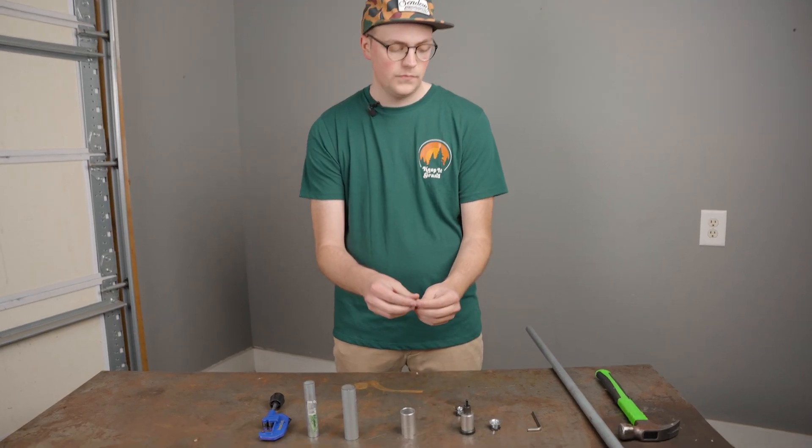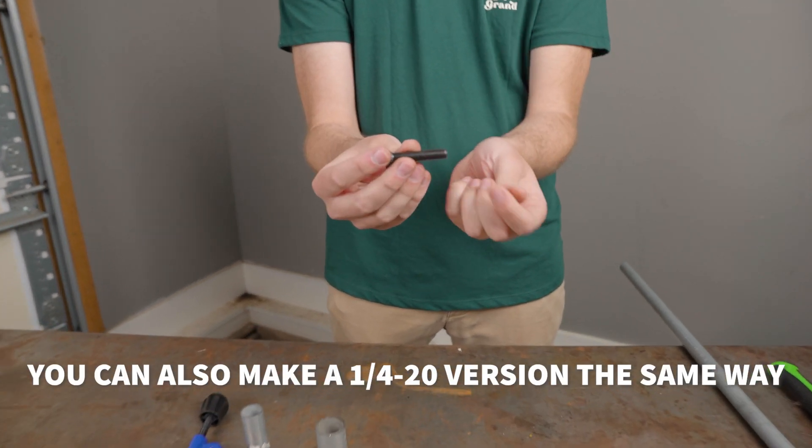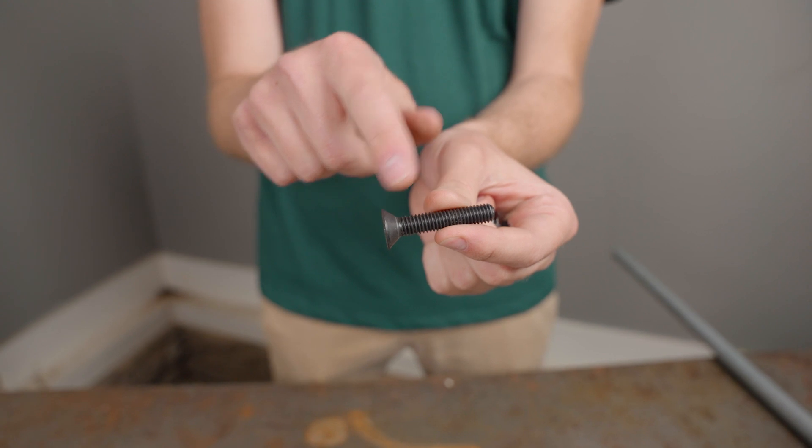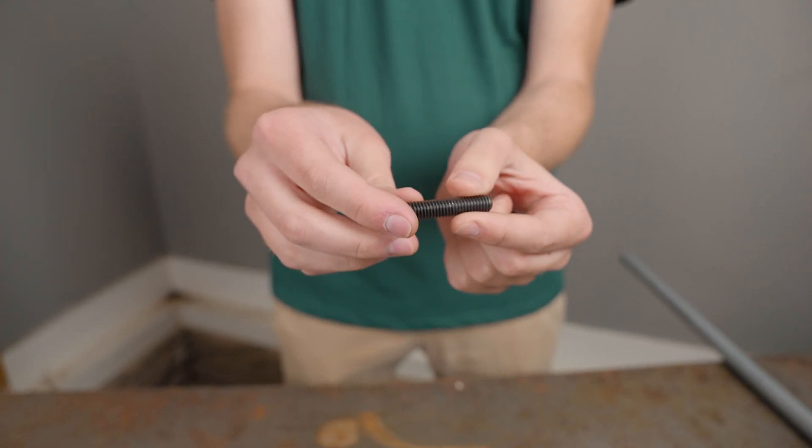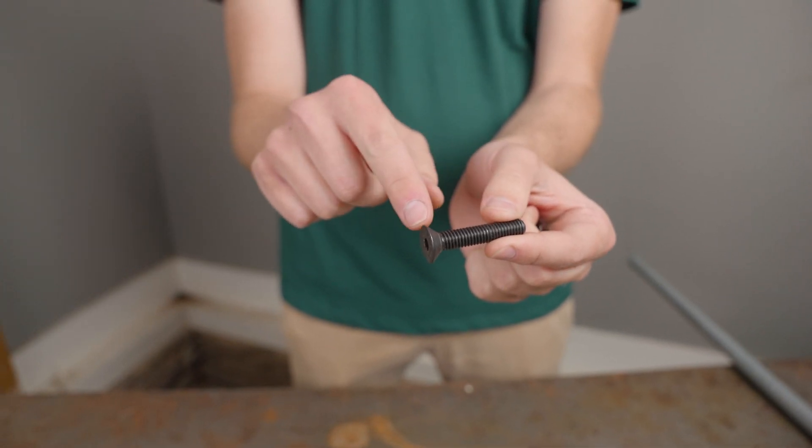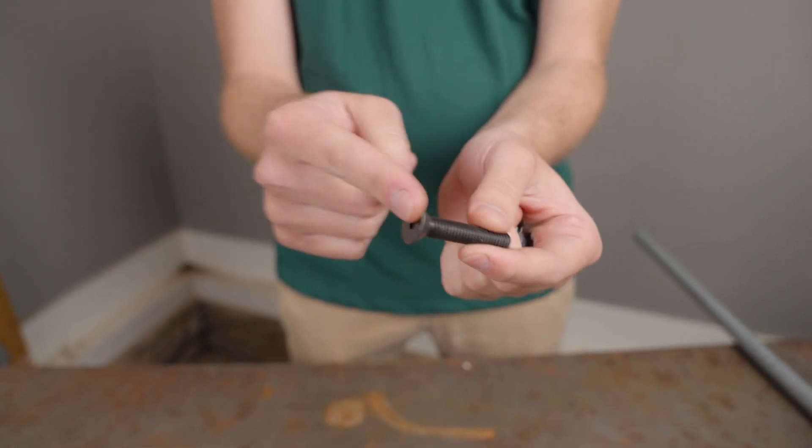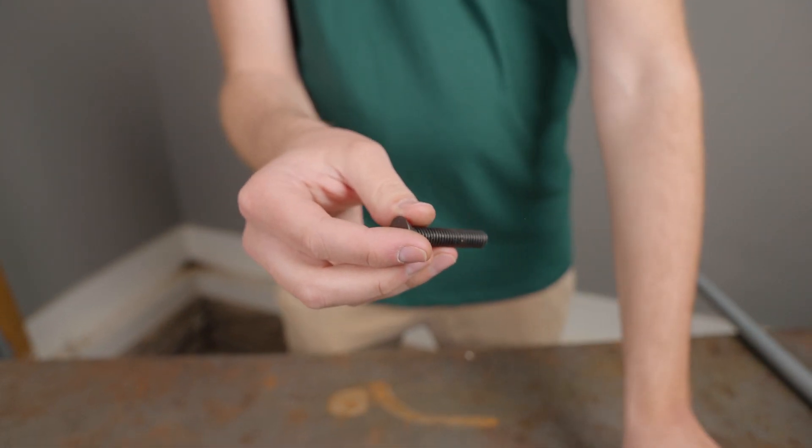So basically what I've done here is just got a 3/8-16 bolt. It's about an inch and a half in length and you want to make sure that the threads go from the head of the bolt to the end. Sometimes you'll get a longer bolt and it'll have a smooth spacer between the threads and the head. You want it to be a piece of all thread with a head on the end and we're basically just going to recreate this tool.